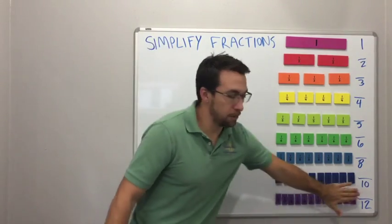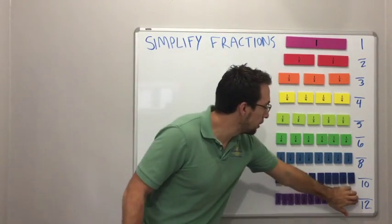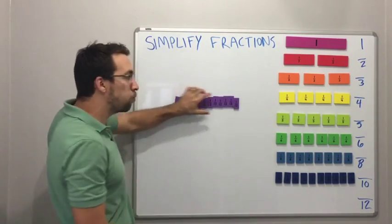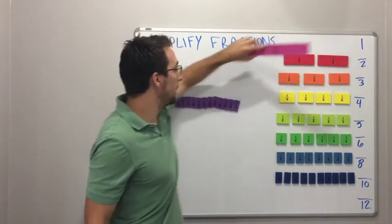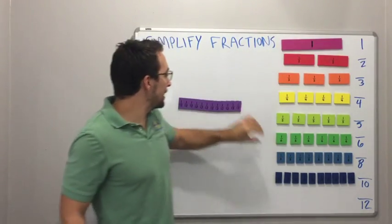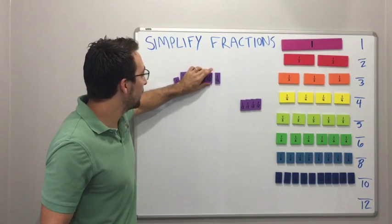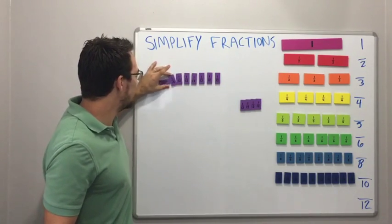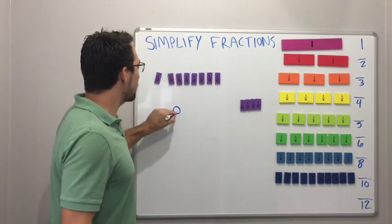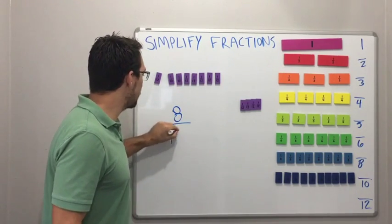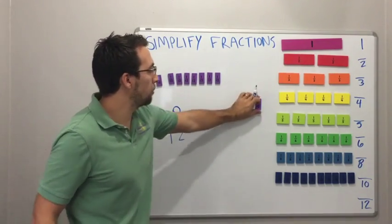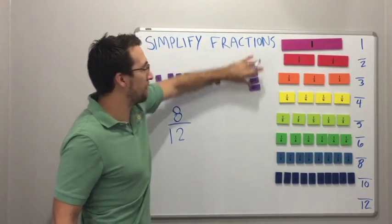So let's look at twelfths. Let's say we have 12 out of 12, that's 1, right? 12 out of 12 equals 1. It's the same size. Let's say that we have 8 twelfths. How do we reduce 8 out of 12? So I have 8. How many pieces do I have? I have 8 out of 12. So I'll put these vertically.